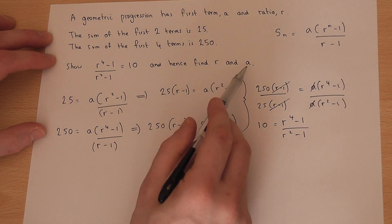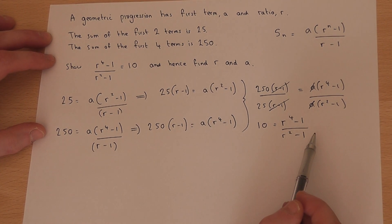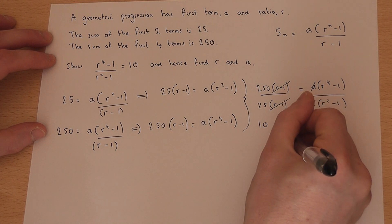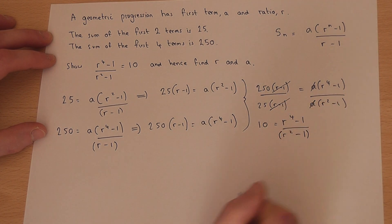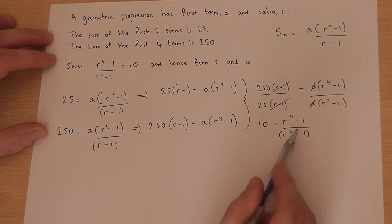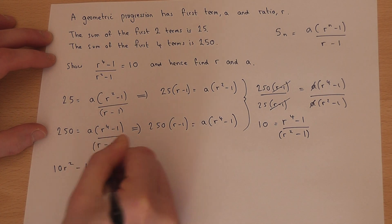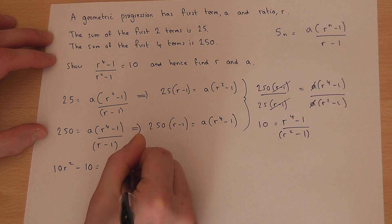Now to find r and a requires us to solve that equation. So I put brackets around the bottom and multiply by (r² - 1). So I get 10r² - 10 = r⁴ - 1.